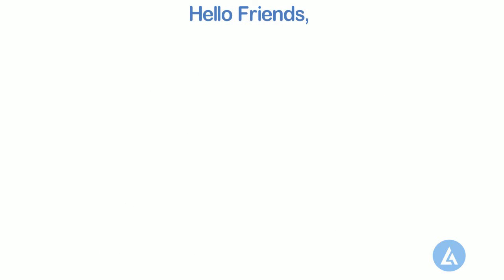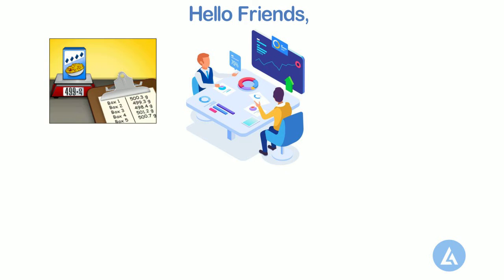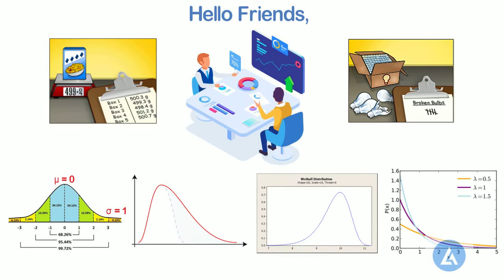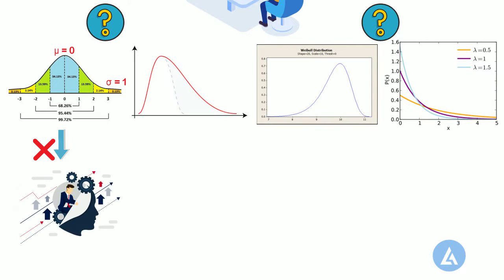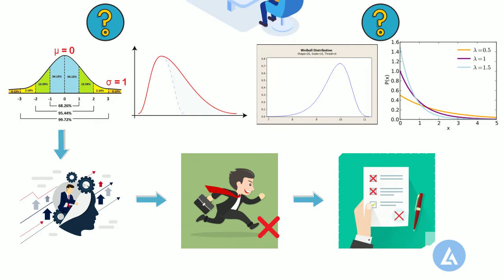Hello friends. Many times when we go for analysis, the first question that comes to mind is about the type of data and which distribution is the best fit for the data. This is a very important step before going for analysis. If we select an incorrect option for the analysis, then the interpretation of the results will be incorrect, which in turn initiates incorrect action and thereby incorrect results.